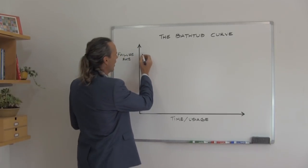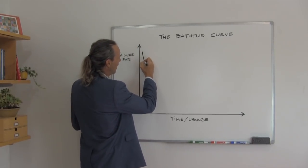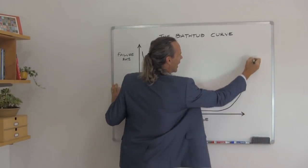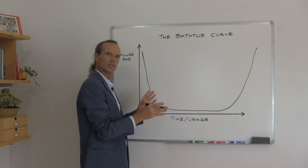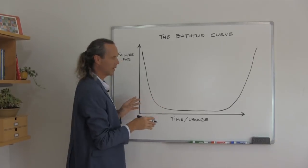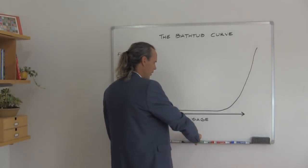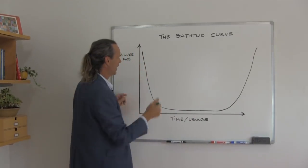The actual graph of the lifespan of a car would look a lot more like this, which very much looks like the cross section of a bathtub, hence the name: the bathtub curve.